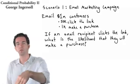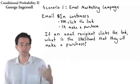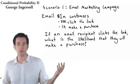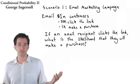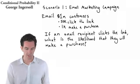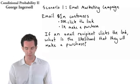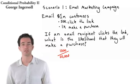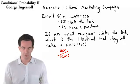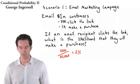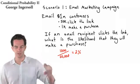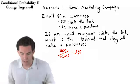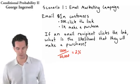We know that 50,000 clicked the link, and of those 50,000, 1,000 made a purchase. So the probability of someone making a purchase after they've clicked the link is just 1,000 over 50,000, which is equal to 2%. So 2% likelihood — if they click the link, then they'll make a purchase. That's also known as the conversion rate in business terms.